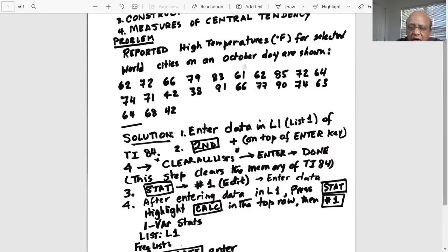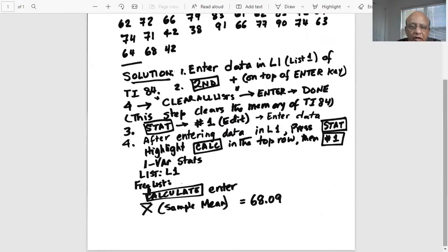Once we have entered all the numbers in L1, we then press the stat button again, which is in the second row of calculator screen. Then highlight calc on the top row, and then we select number one, which gives us one-var stats. Notice the first line is list, which is already set up as L1, list one. And then frequency list is the second line, keep it empty. And then bring your cursor down on calculate and hit enter.